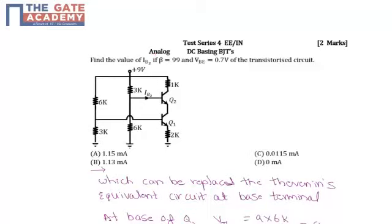Hello students, the given question is from Test Series 4, Analog subject, from the chapter DC Biasing BJT. This is a two-mark question.